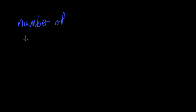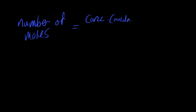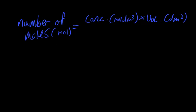The first equation: number of moles equals concentration (in moles per dm³) multiplied by volume (in dm³). This gives us the number of moles. Note that dm³ is basically the same as one liter, and is also the same as one thousand centimeters cubed.